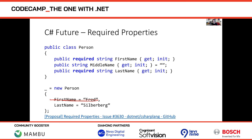Required members also help with DTOs that need a parameterless constructor for reflection-based frameworks. With nullable enabled, you currently get warnings on non-null fields that aren't set in the parameterless constructor, and you'd silence them with the null-forgiving operator. With required members you can just mark them required, and every constructor automatically inherits the required member list. You can opt a specific constructor out by indicating it satisfies all requirements by itself.